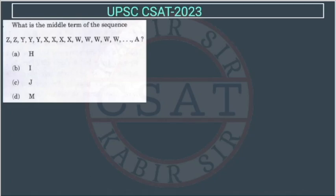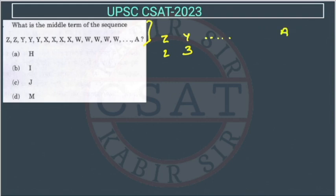See this question: what is the middle term of the sequence? They have given this sequence Z, Z, Y, Y, Y — so Z is coming twice and Y is coming thrice. This is in reverse order of the alphabet. Z is repeated twice, Y is repeated thrice, and similarly it will keep going on.